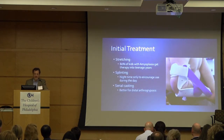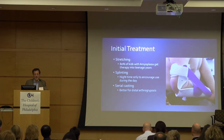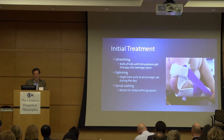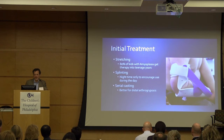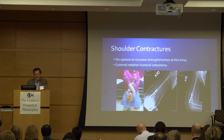Initial treatment: stretching — 80% of kids with amyoplasia get therapy into their teenage years. Splinting: we try to discourage daytime splinting unless it provides functional improvement, and restrict splinting mostly to nighttime to encourage use. Serial casting we've found is overall better for distal arthrogryposis than for amyoplasia.